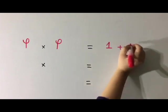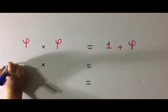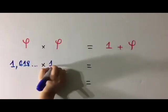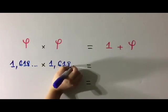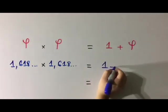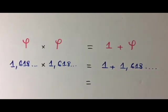In other words, if we multiply 1.618 by 1.618, the result will be the same as if we did 1 plus 1.618, which is equal to 2.618, etc.